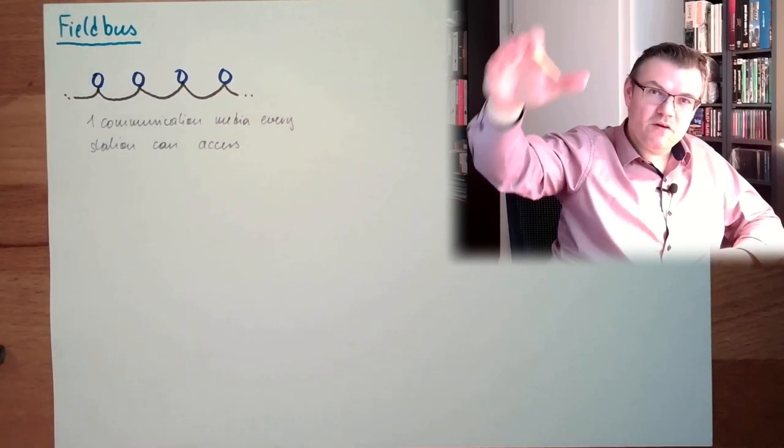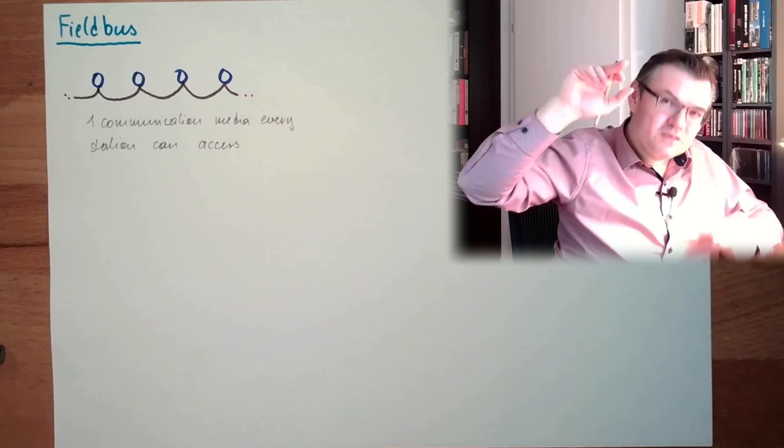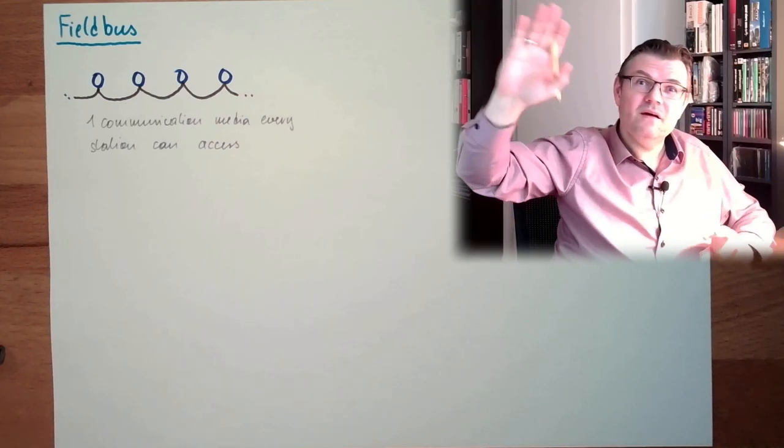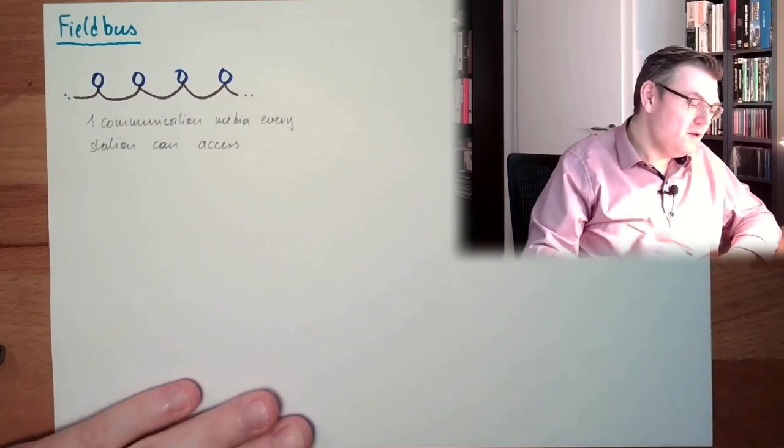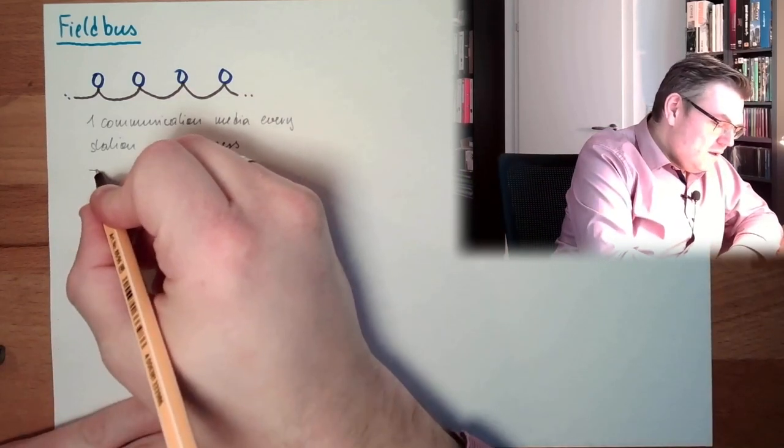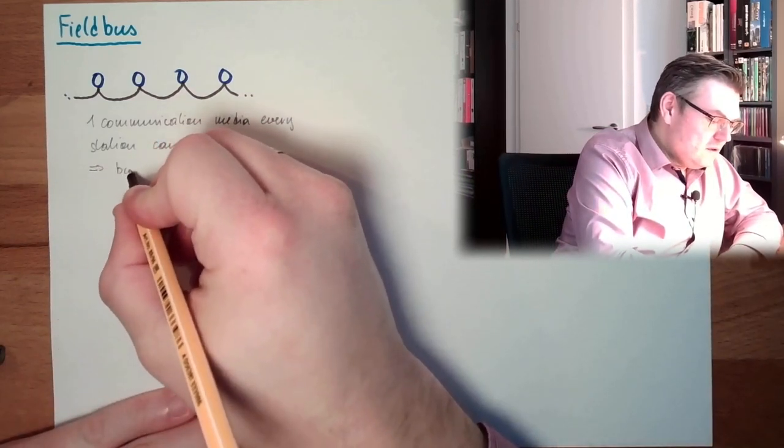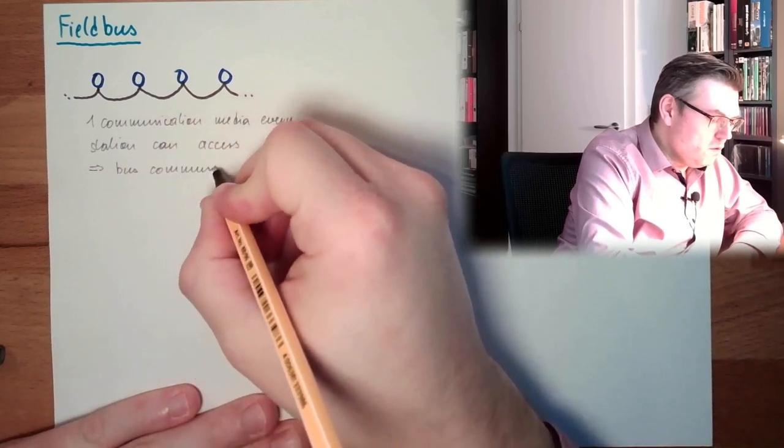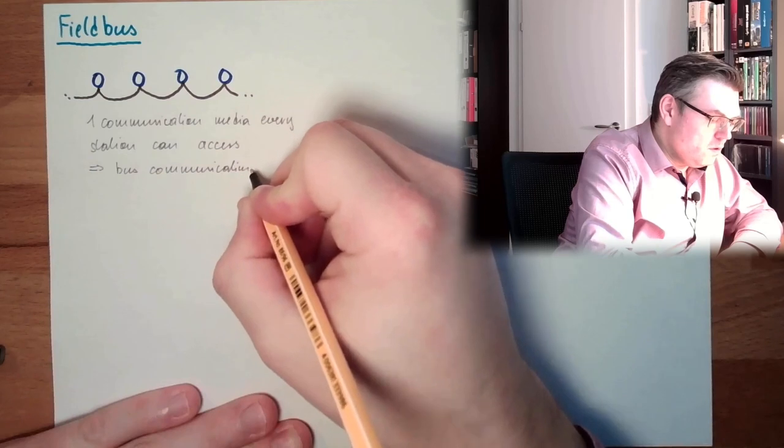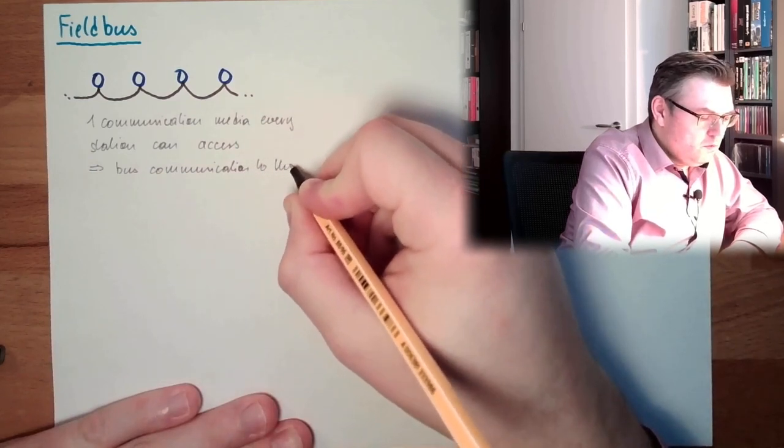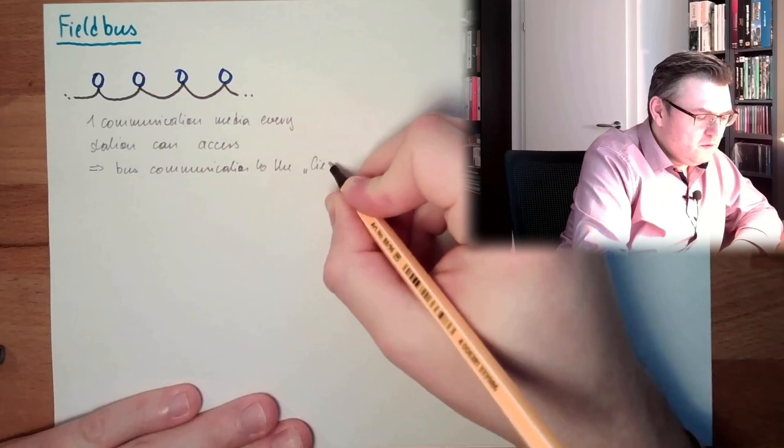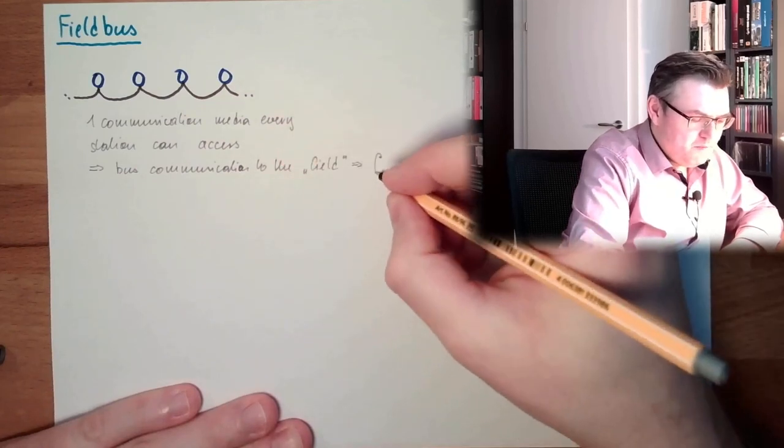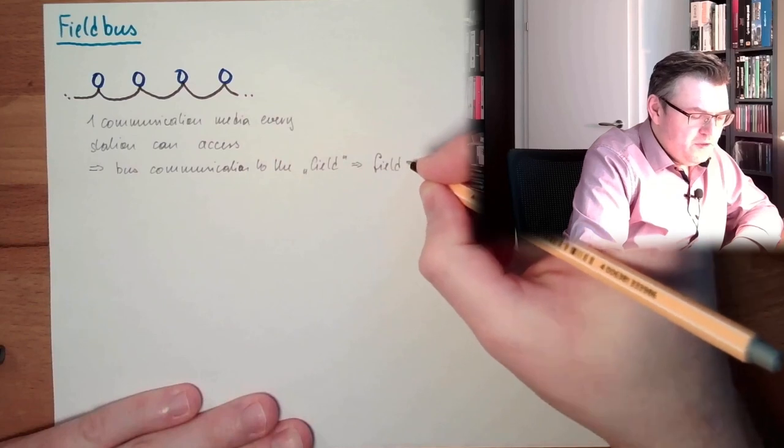This is the field of application. There is somewhere a sensor, somewhere a control system, somewhere in the so-called field, in your area what you want to automate. So this is bus communication to the field. And this explains the name - field bus.